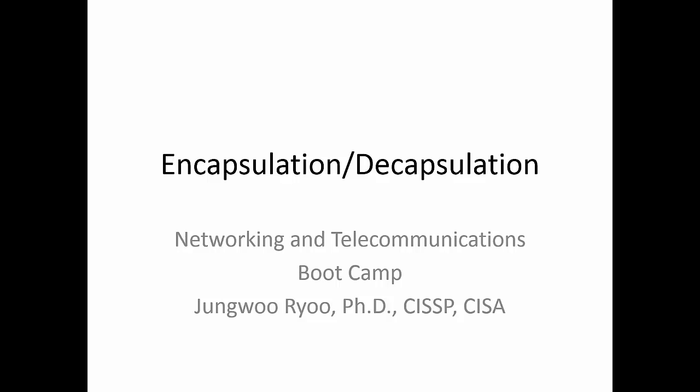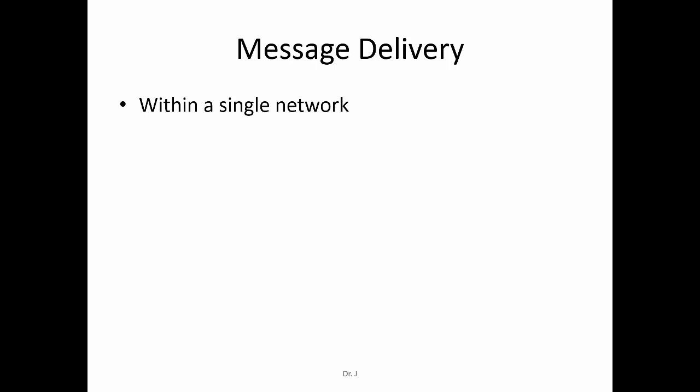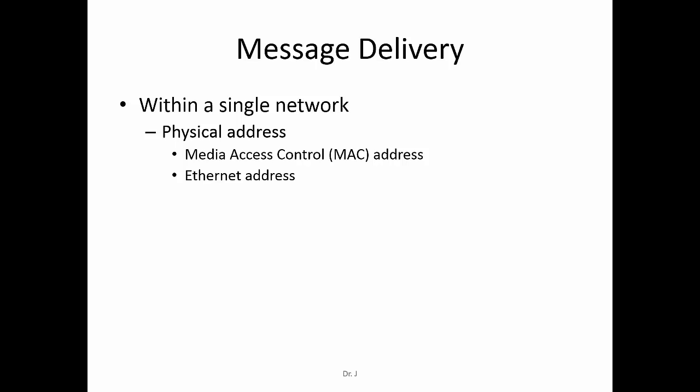Encapsulation and decapsulation is a very critical concept to understand how messages are being exchanged in a networking and telecommunications setting. We can think of message delivery mainly in three different contexts. The first is message delivery within a single network, where you need an addressing scheme. We use something called a physical address to specify the source and target addresses in frames. This is also called the media access control address, or MAC address, or Ethernet address.